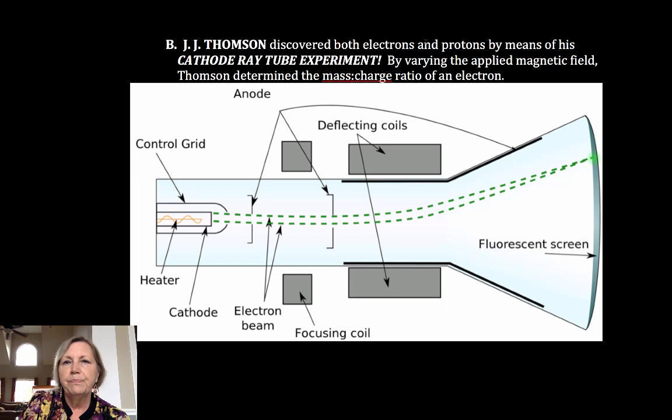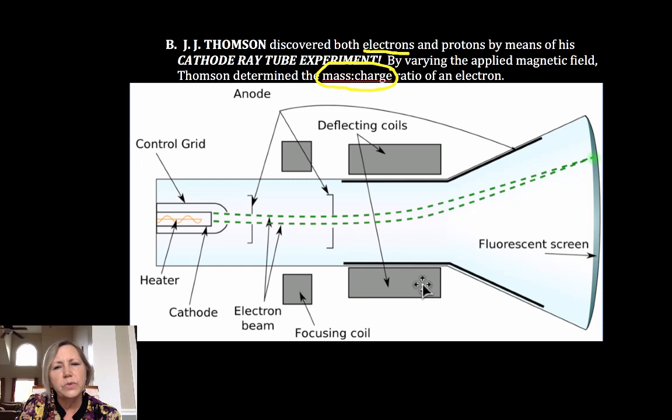The next one I briefly want to mention, there's some very good animations and videos online about this, so I don't want to belabor it too much. But J.J. Thompson, he discovered electrons and protons, but I want to talk primarily about electrons. And he did experiments not quite like this one. This one's a little more current than what he used, but he determined the mass to charge ratio of an electron, not just that it was negative, but the mass to charge ratio. It would be a later experiment where Millikan would find the mass of an electron.